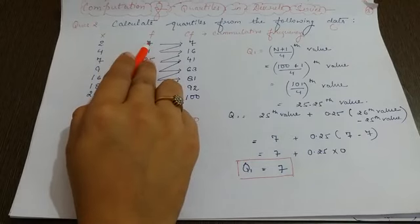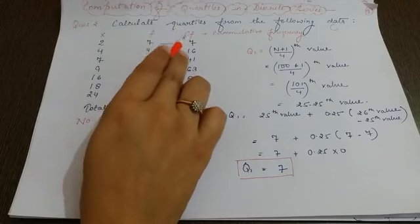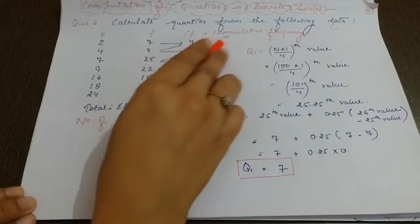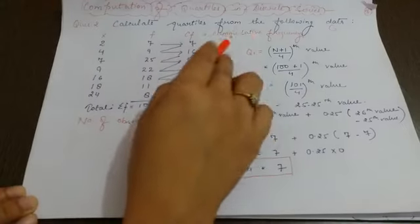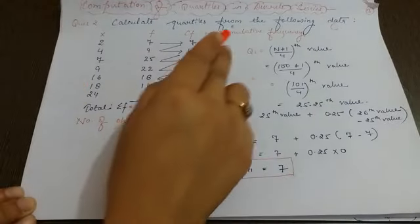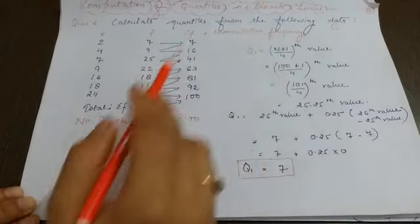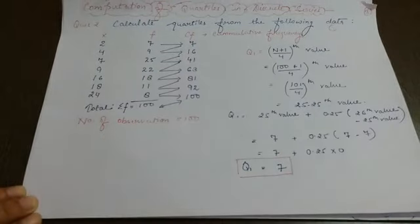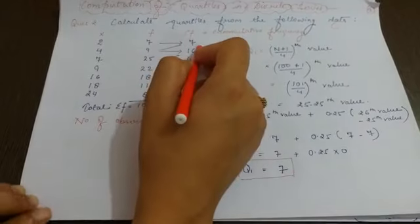So the first step you need to follow is to calculate the CF. CF stands for cumulative frequency. Now what is this cumulative frequency? This cumulative frequency you have to calculate with the help of frequency. How does it calculate? Look at here.